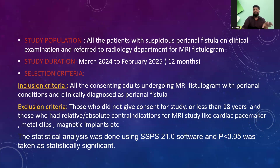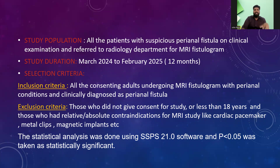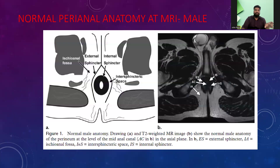The study population included all patients referred to the radiology department for MRI fistulogram on clinical suspicion of perianal fistula. Study duration was 12 months. Inclusion criteria: all consenting adults undergoing MRI fistulogram on clinical suspicion of perianal fistula. Exclusion criteria: those who did not give consent or had relative or absolute contraindications for the MRI study.